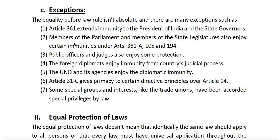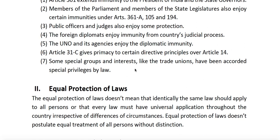Other immunity is provided to members of Parliament and members of state legislatures. They are not liable for any civil or criminal proceedings for any publication in the newspaper of any proceedings of the houses, and they cannot be arrested. Public officers, judges, foreign diplomats, the UN and its agencies, and certain special groups also enjoy some immunity.